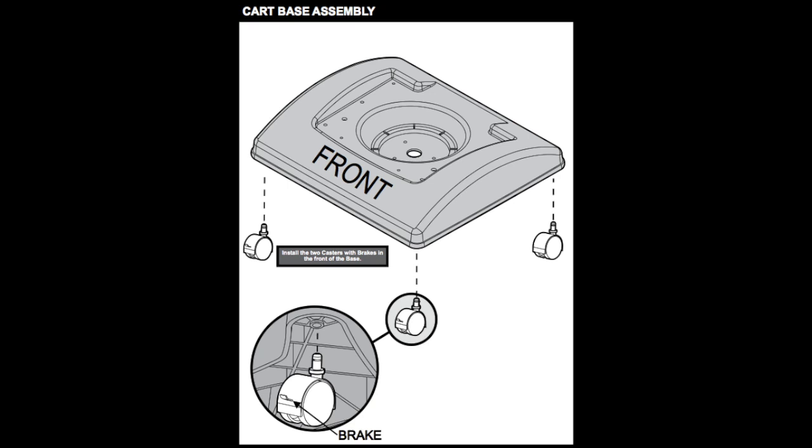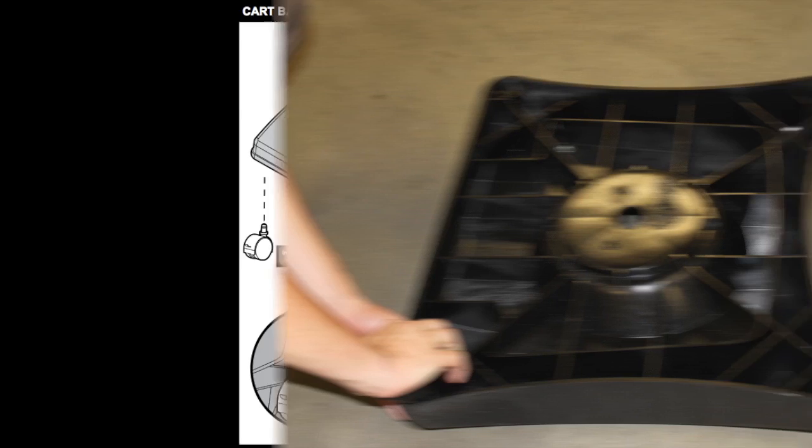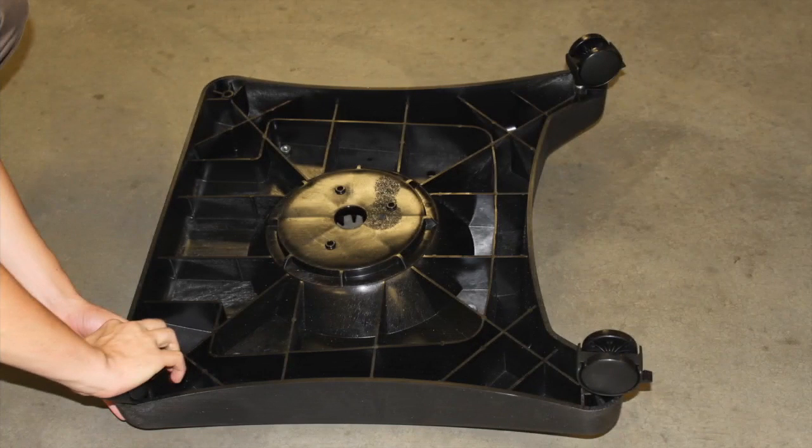Start assembling the cart by inserting the four casters into the cart base, making sure to put the locking casters in the front. If you plan to bolt your cart to the deck or patio, you can skip the wheel installation.